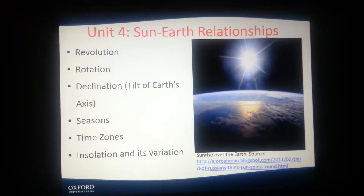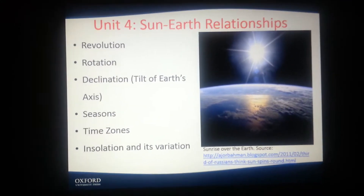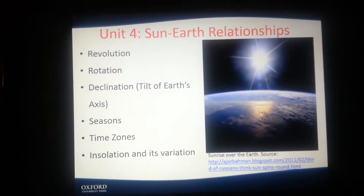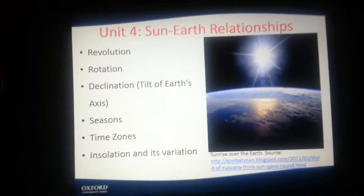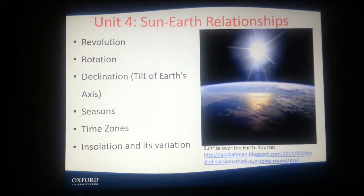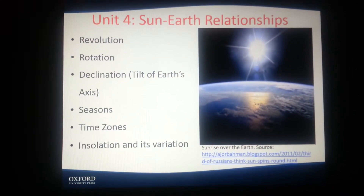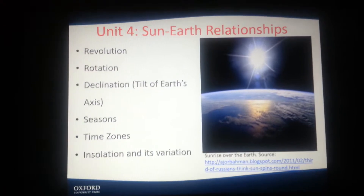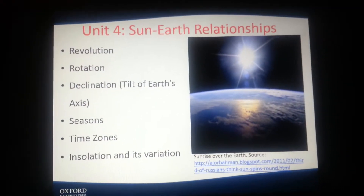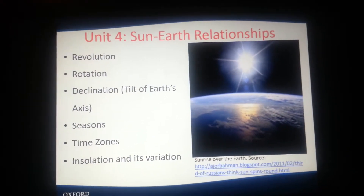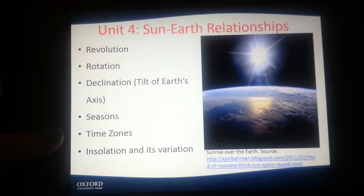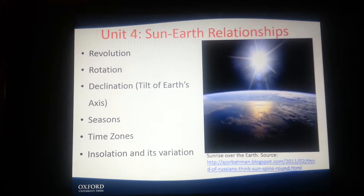We'll probably end on Unit 5 and then do a Part 2. So let's continue on to Unit 4: Sun-Earth Relationships. This includes revolution, rotation, declination or the tilt of Earth's axis, seasons, time zones, insolation, and its variation. This is an image of sunrise over the Earth.